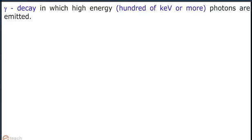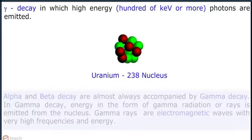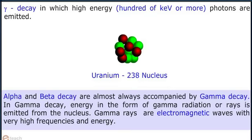Gamma decay, in which high-energy photons — hundreds of kilo-electron volts or more — are emitted. Alpha and beta decay are almost always accompanied by gamma decay. In gamma decay, energy in the form of gamma radiation or rays is emitted from the nucleus. Gamma rays are electromagnetic waves with very high frequencies and energy.